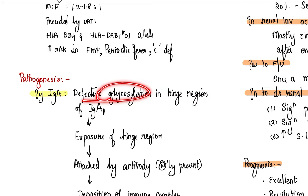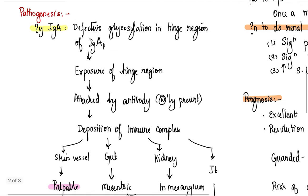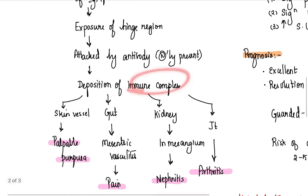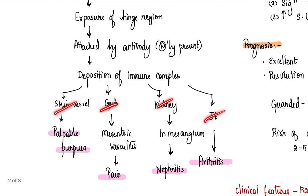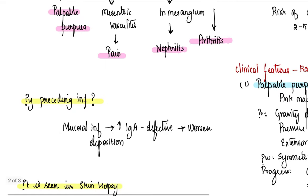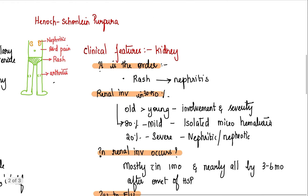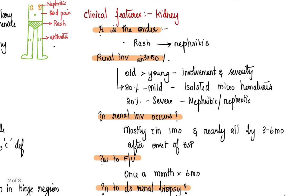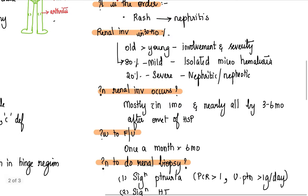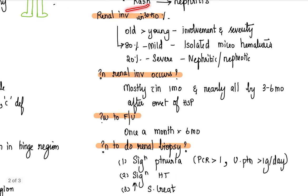Epidemiology: four to six years, slight male preponderance, preceded by URTI. Pathogenesis: due to defective glycosylation of hinge region, there is antibody attaching to that region, resulting in immune complex deposition in skin, gut, kidney, and joint, resulting in the classical tetrad. What do you see in pathology? You see leukocytoclastic vasculitis with IgA, complement, and fibrinogen deposition in vessels.